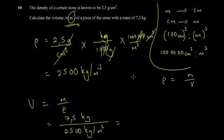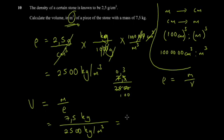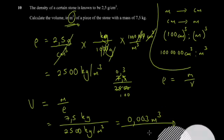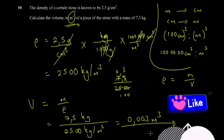So volume = 7.5 / 2500. Simplifying: divide both by 100 to get 0.075 / 25, then shift the decimal two places, giving 0.003 cubic meters. That's the final answer. Thanks for sticking around — make sure you like, share, and subscribe.